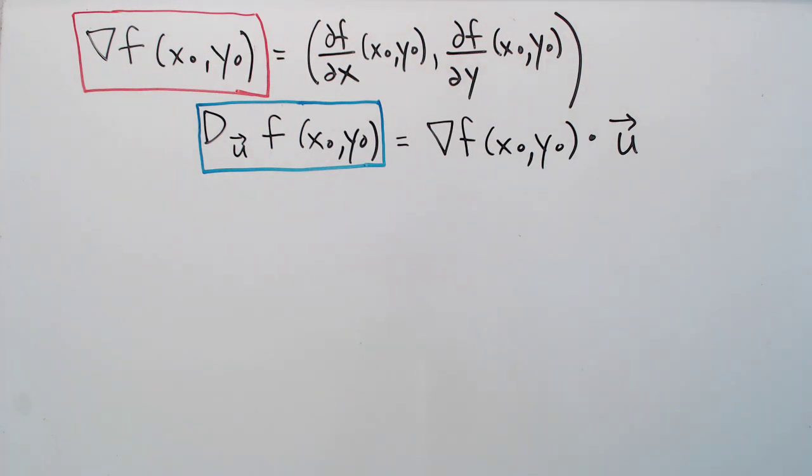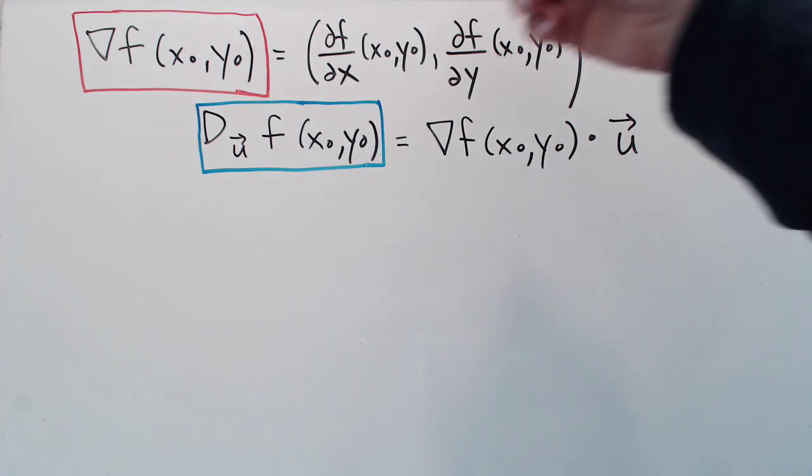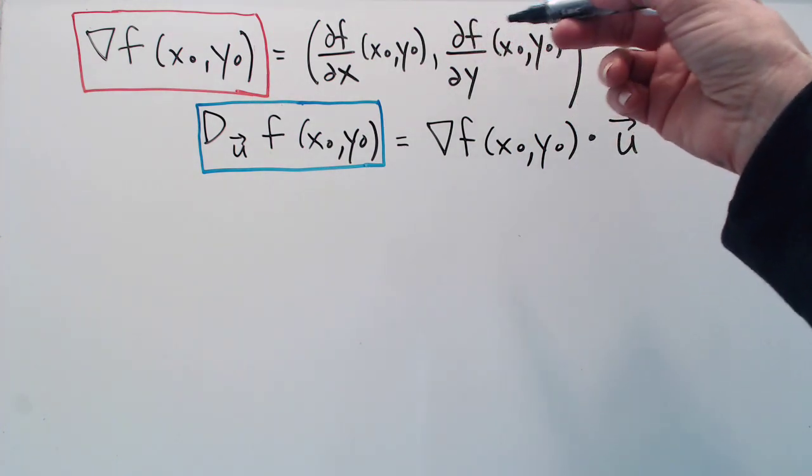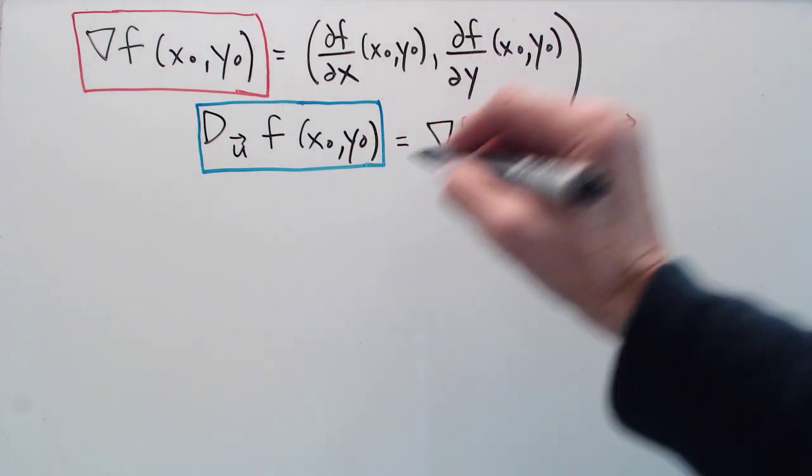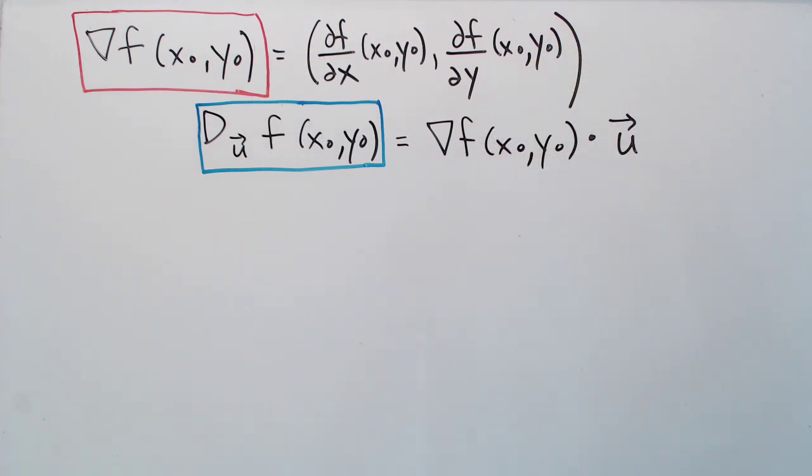I'm back with my second Khan Academy video. Recall that in the first one we defined the gradient of a function of two variables and the directional derivative of a function in the direction of a unit vector u.